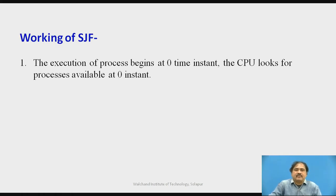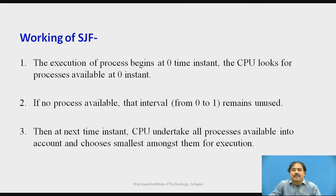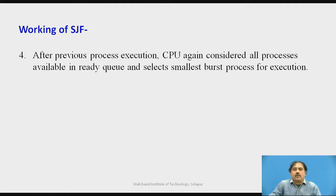Now, working of this SJF algorithm: we always start execution in the CPU at the 0th time instant. The CPU looks for all processes available in the ready queue at the 0th time instant and chooses the process with the smaller burst time. If no processes are ready at the 0th time instant, that time slot goes unused. Then we check processes available at the first time instant and make a choice based on smaller burst time.